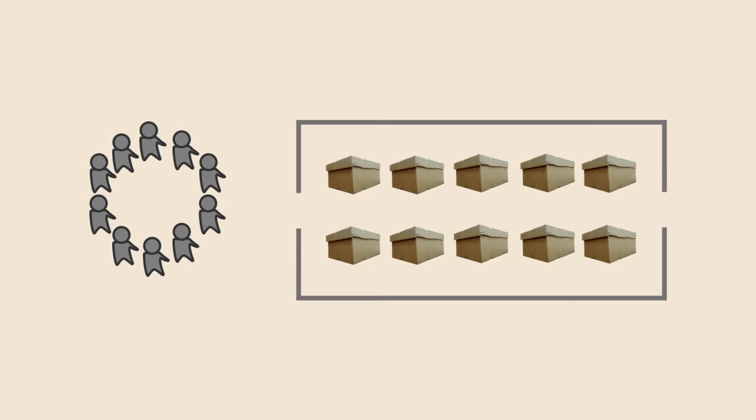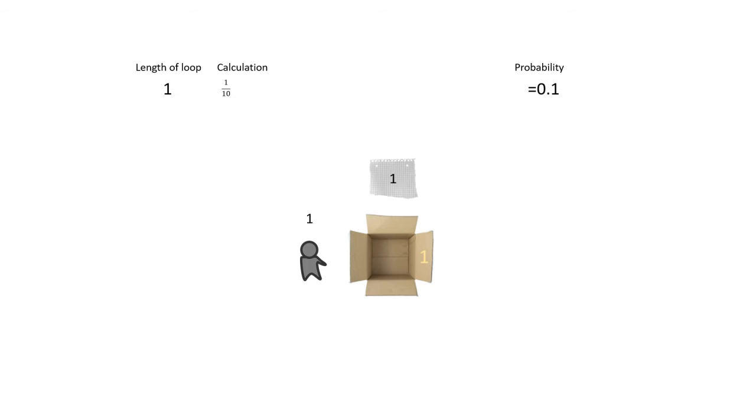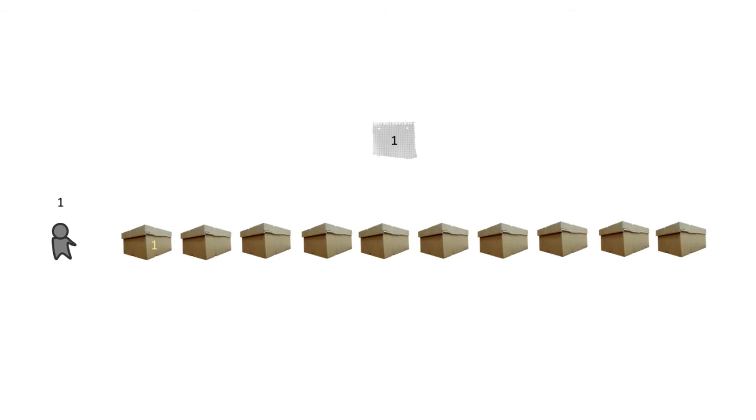So I've looked at the probabilities of starting at a box. How long would it be before they open a box that has their number in it? So the simple one is to look at a loop of 1. This is where the prisoner opens the box that has their number on it, and their number is written inside it. This has a probability of 10%. So what about the other end of the scale?